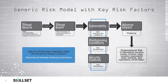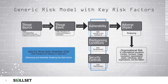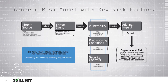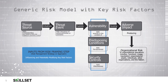Here we have a generic risk model with key risk factors. We start by evaluating our threat source and looking at the capabilities and intent of our adversarial threats. The threat source will create a threat event — some sequence of actions or activities — that will typically take advantage of some vulnerability in our systems or facilities, based on conditions we are predisposed to, and most likely violating our security controls. This causes an adverse impact on our organization, producing organizational risk to our operations, such as our mission, image or reputation, assets, employees, or even other organizations and the nation as a whole.